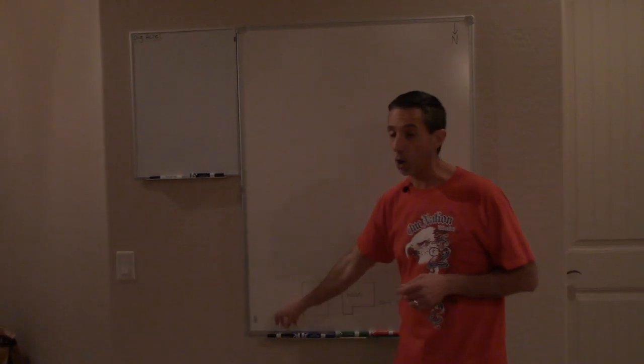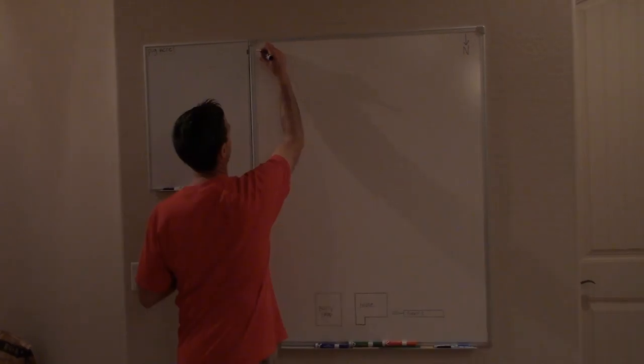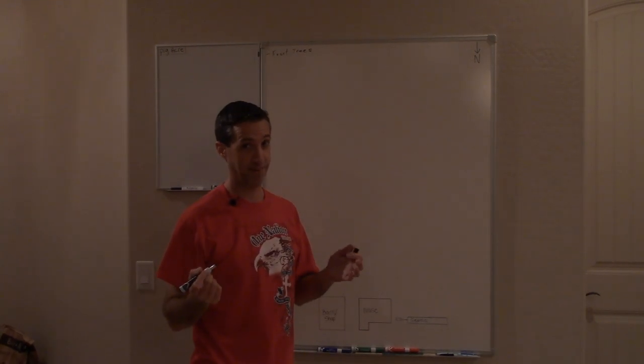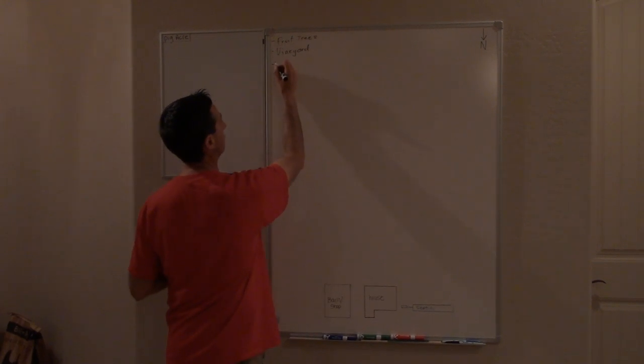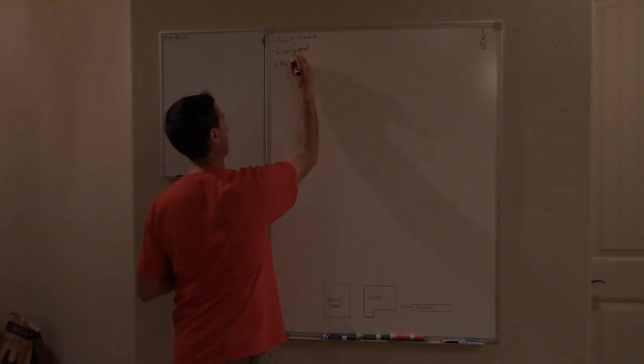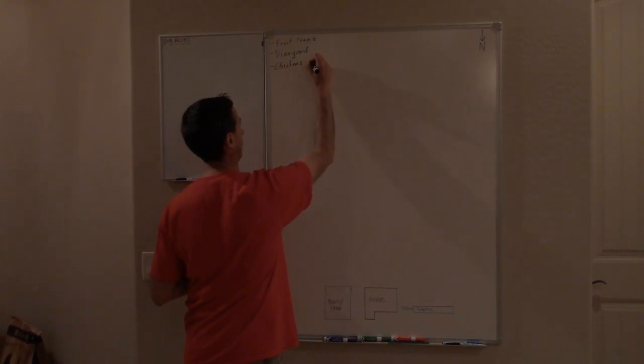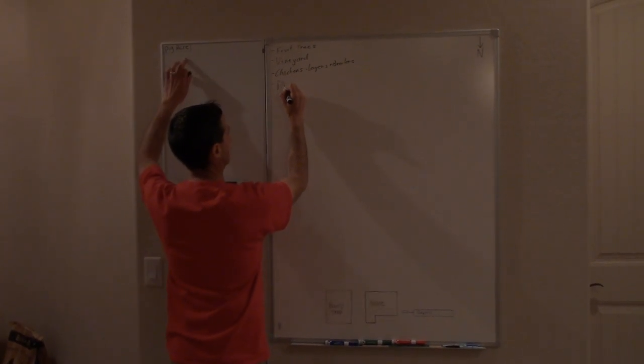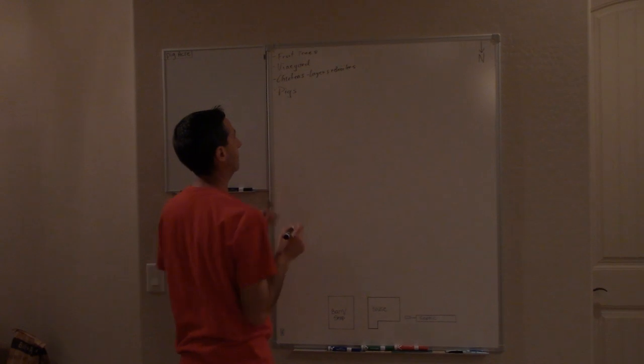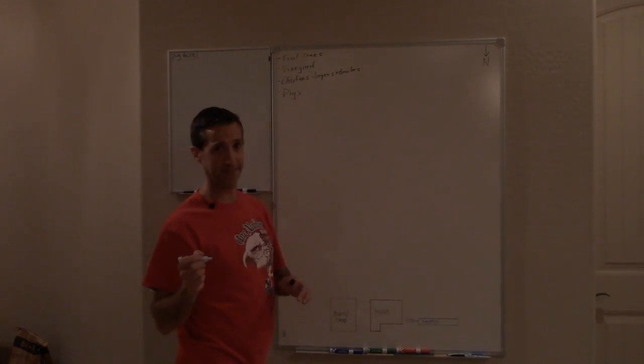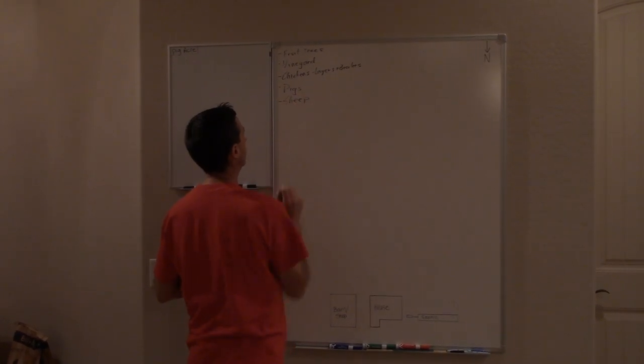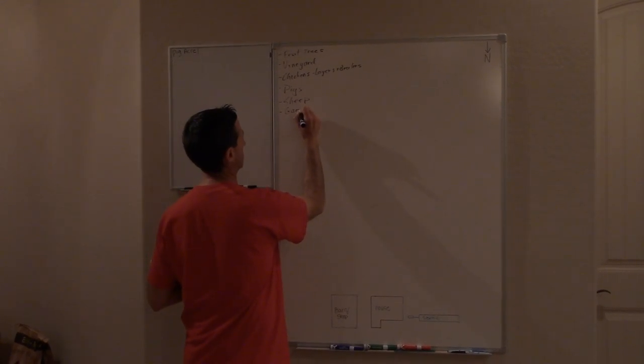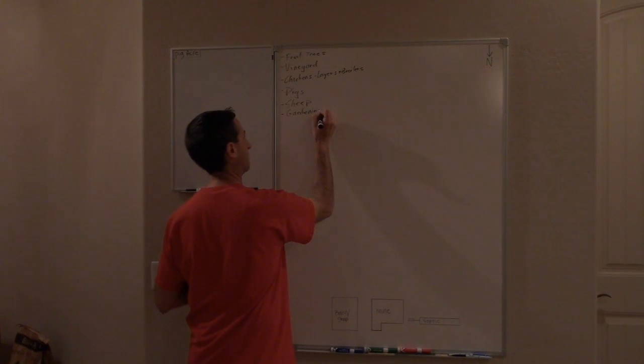A few things that we know we're going to have. We know we're going to have fruit trees. We know we're going to have our grape vines because we love our vineyard. After that, we do know that we're going to have chickens. And so with our chickens, we're going to have layers and broilers. Sorry about the audio here, guys. We had a little issue, but what I was trying to say is next thing would be pigs. And then one of the things we're going to test would be sheep. We are going to test sheep on this property. And then of course, how can we forget? We are going to obviously be doing some gardening.